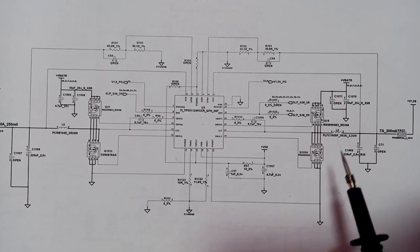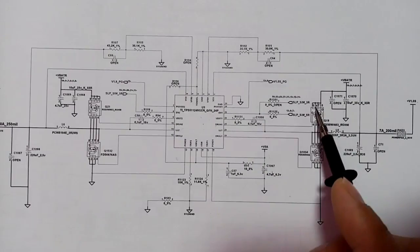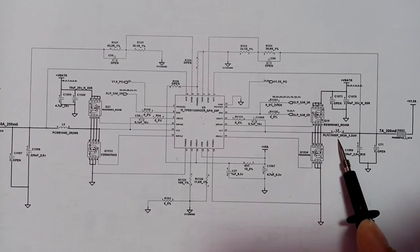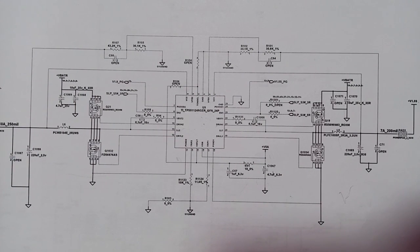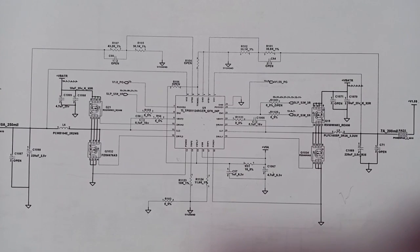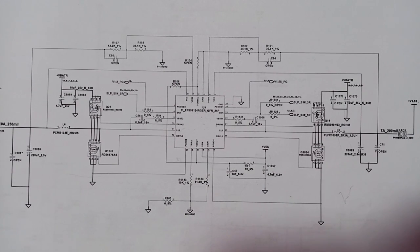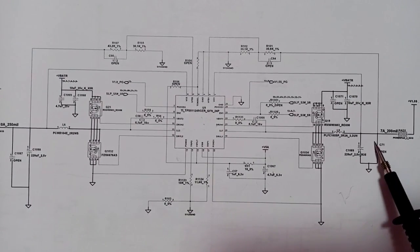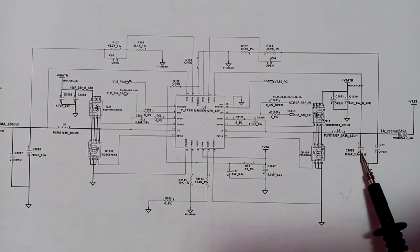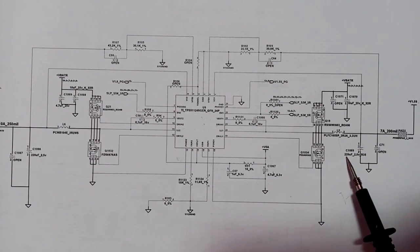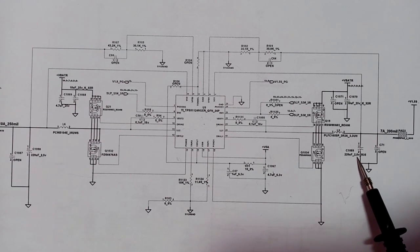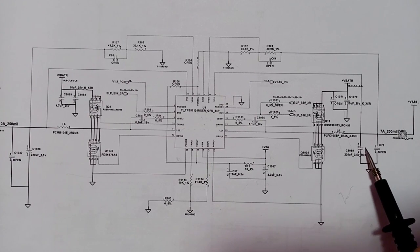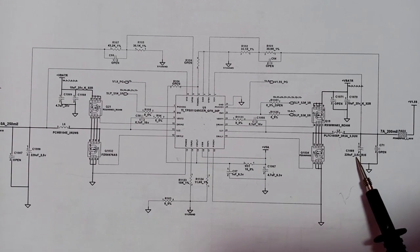Every channel you will find MOSFETs — usually two MOSFETs — and an inductor. The purpose of the inductor in every channel is to increase the current. The inductor also has the purpose of filtering the current, but the main purpose is to increase the current. And here we have two filtering capacitors: one chemical capacitor with a capacity of 220 microfarad and 2.5 volt.